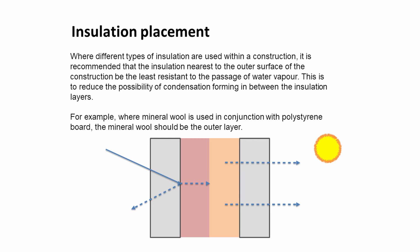There is an important thing about insulation placement within a wall that we'd have to consider within cavity wall construction. We need to think about how moisture-resistant or vapor-resistant the insulation material is. Where we use different types of insulation within a construction, we need to use the insulation that is least resistant to the passage of water vapor towards the outside of the building. This is to reduce the possibility of condensation forming between the insulation layers. For example, if we were using mineral wool and polystyrene, mineral wool would allow water vapor to pass out, so we would use that as the outside layer.